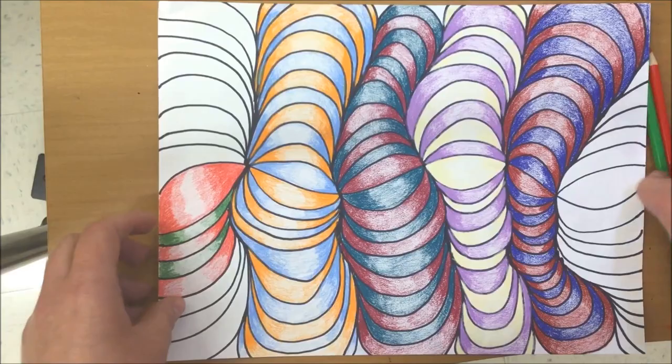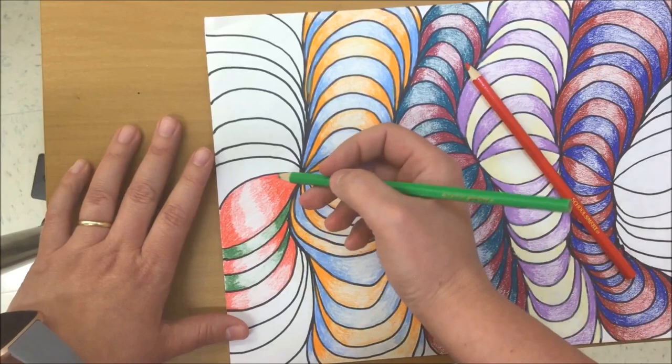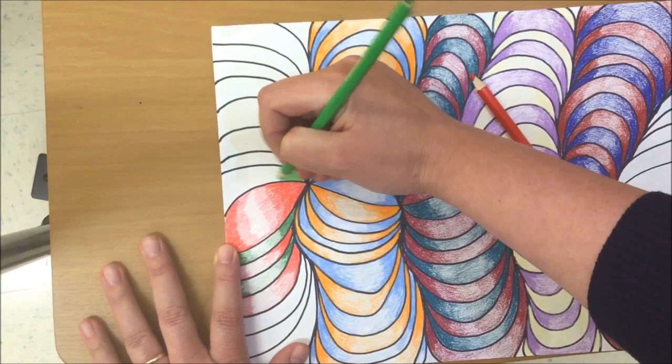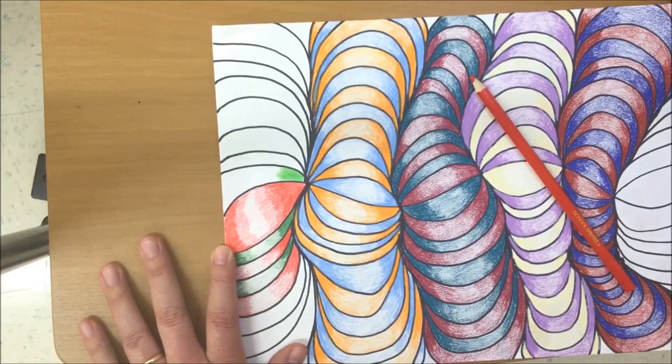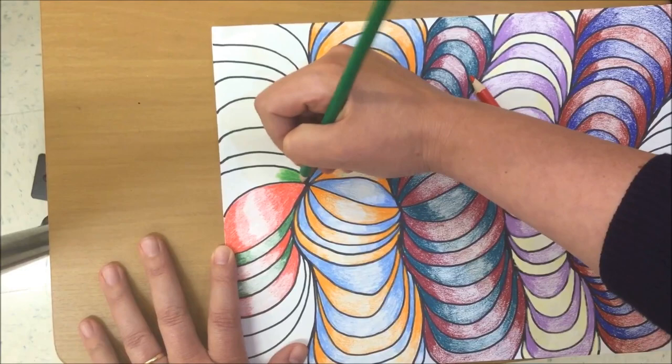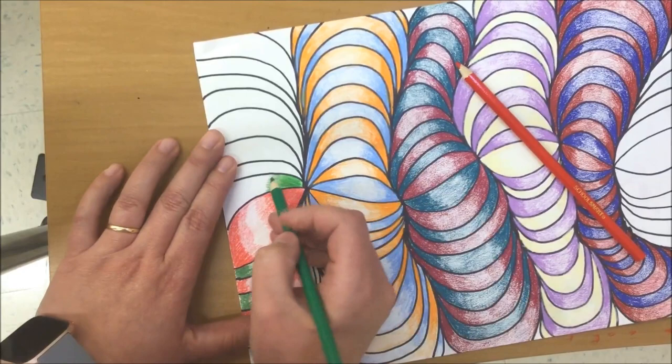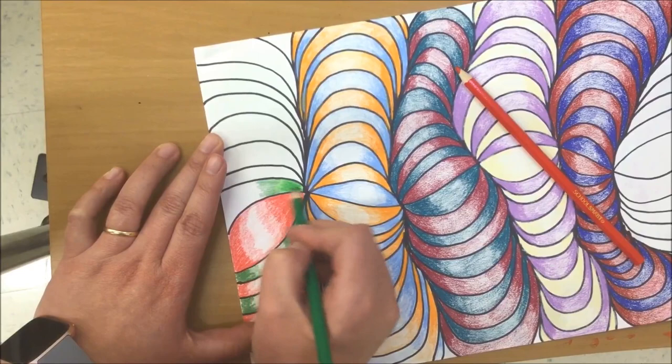Over here I'm using red and green, some complementary colors. They look nice together, create a lot of contrast. So I'm going to start by going into the corner and I'm going to color real dark in the corner. Really push down on it. And then I'm going to get lighter by putting less pressure on my pencil. So I got kind of a lighter shade here and a darker shade here.